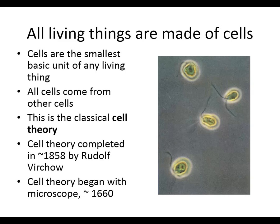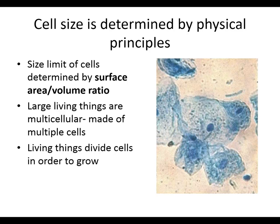So, all living things are made out of cells, as we talked about before. Cells come from other cells. The cell theory required a microscope to talk about. The laws of physics determine that cells have to be small. The reason cells are small is because of what's called the diffusion limit. Diffusion is a law of physics — part of thermodynamics, in other words, entropy.